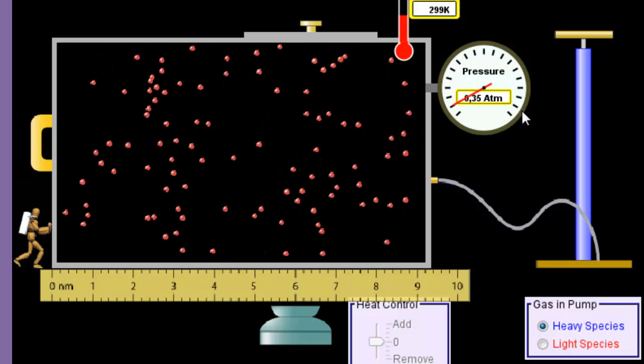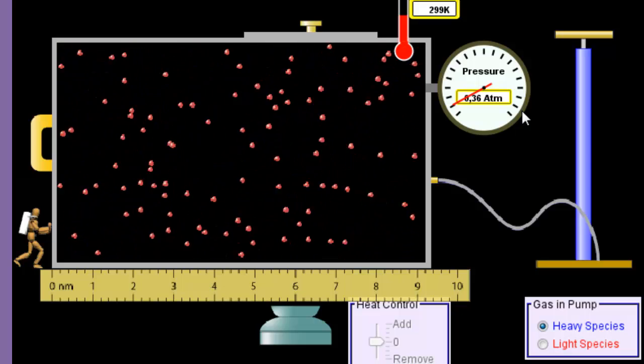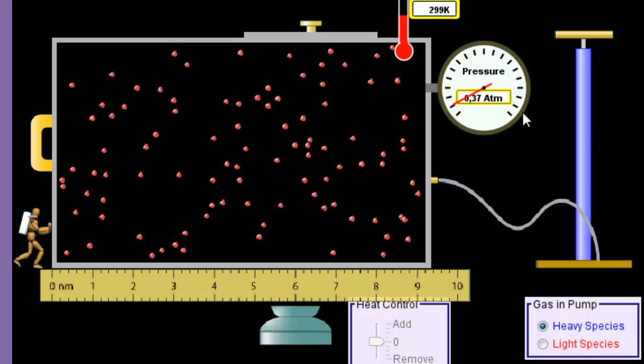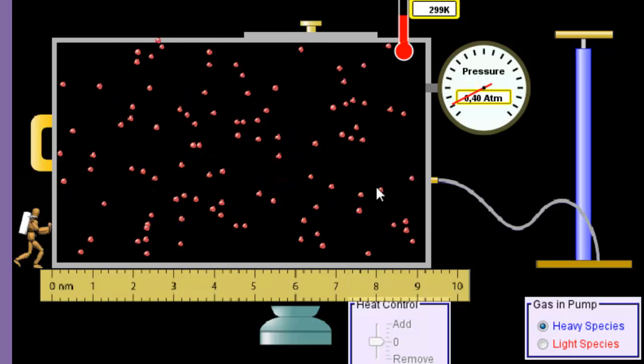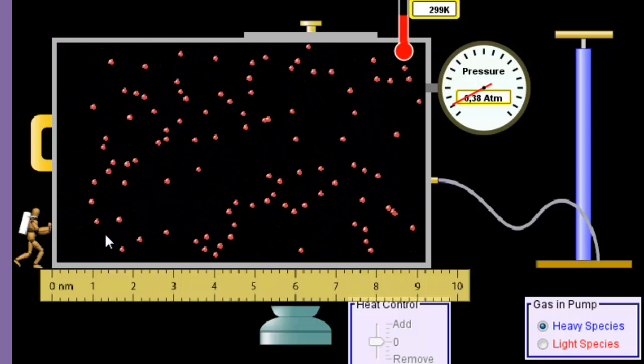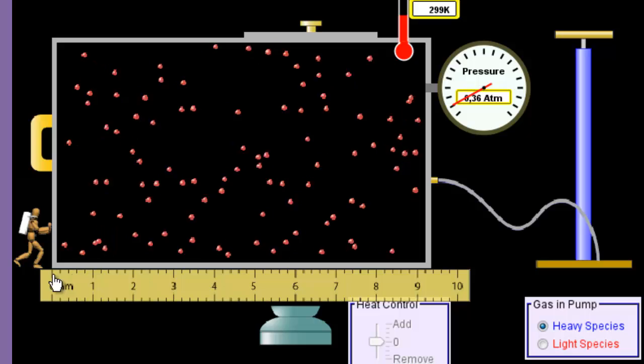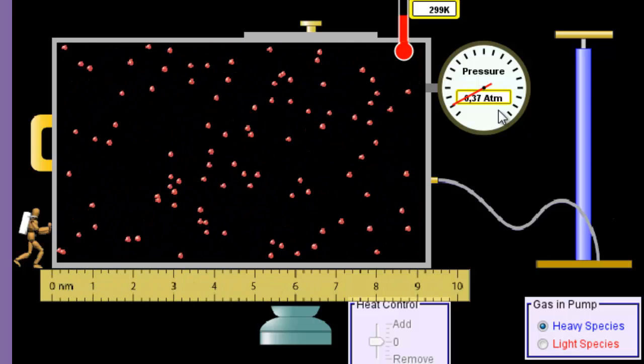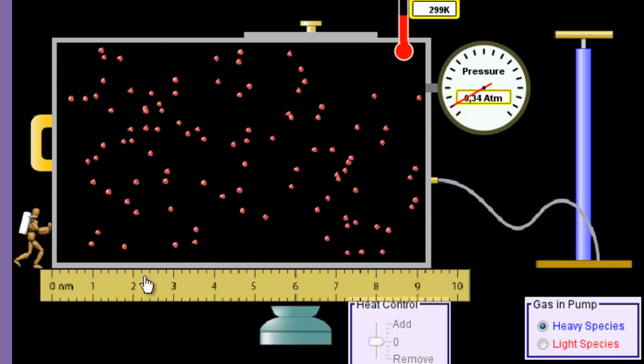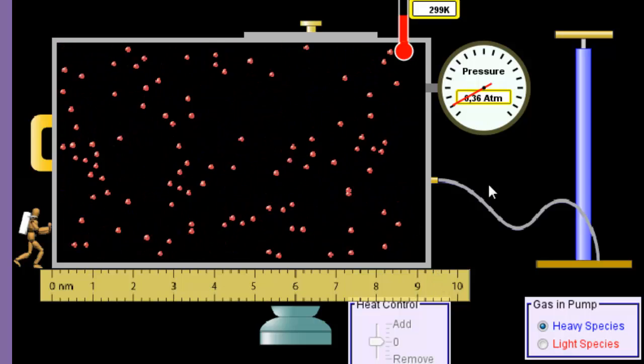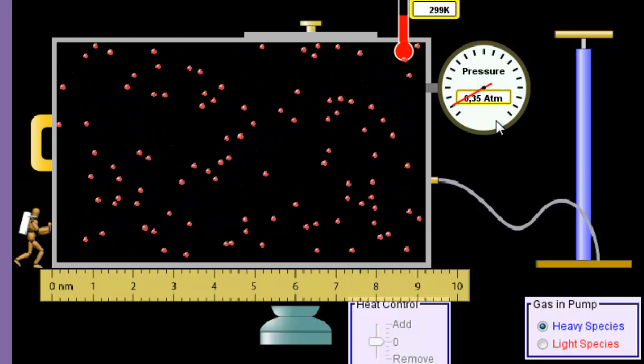Boyle's Law states that the product of the volume and the pressure will always be constant. P times V equals a constant. So now I could take the area in here—I cannot measure the width, but the width stays constant. Really what it comes down to is just that this length times the pressure will equal a certain constant. I could find out what 9.2 multiplied by the pressure is, which gives me a number.